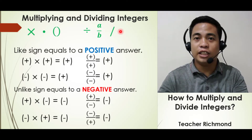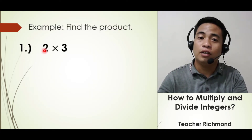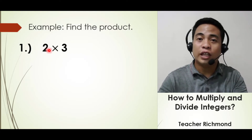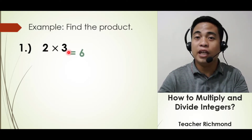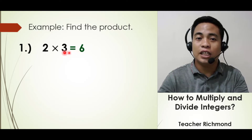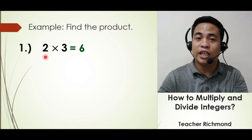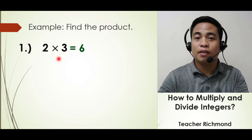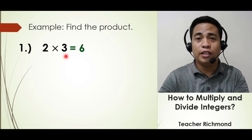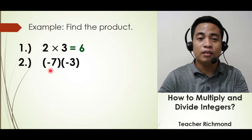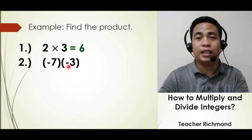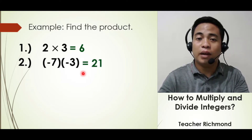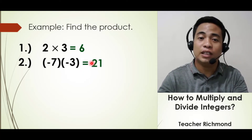Let's jump to the examples now. First example: positive 2 times positive 3 — the answer is positive 6, since both integers have the same sign. Based on the rule, when two integers with like signs are multiplied, the answer is always positive. Second example: negative 7 times negative 3 — the answer is positive 21, because multiplying integers with the same sign always gives a positive result.